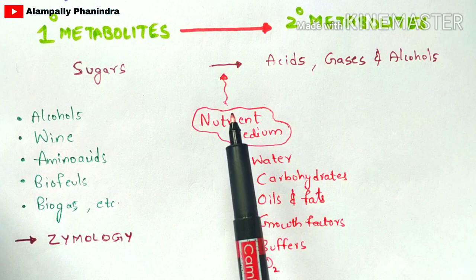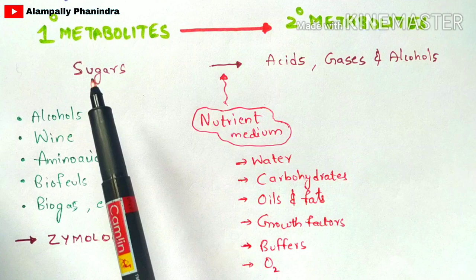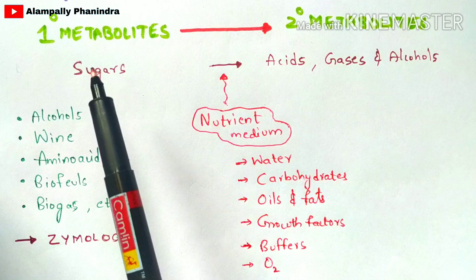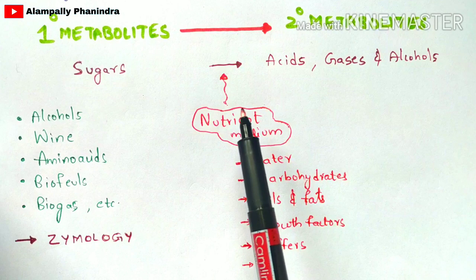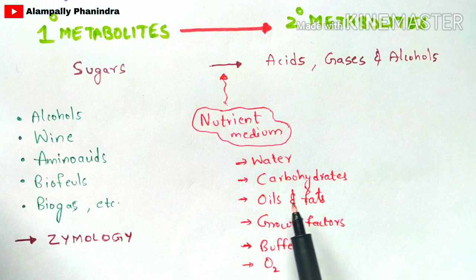The nutrient medium mainly helps in the development of bacteria. For example, lactic acid bacteria produce lactic acid as a secondary metabolite, and for that conversion, nutrient medium is required. For any type of conversion — whether acids, gases, or alcohols — nutrient medium is required. It includes water, carbohydrates, oils and fats, growth factors, buffers, and oxygen.